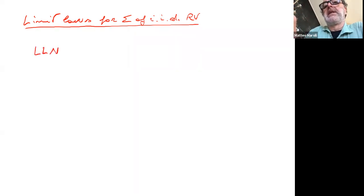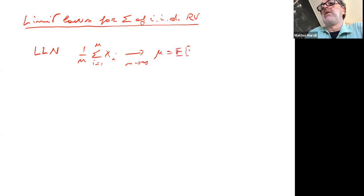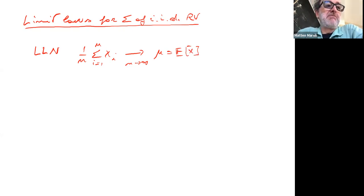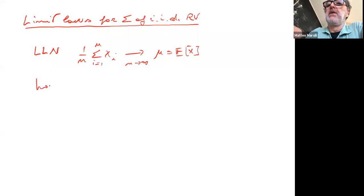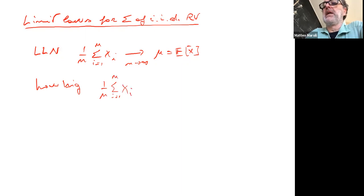The law of large numbers tells us that if you take a sequence of n iid random variables and take the arithmetic mean, then as n goes to infinity, this converges to a constant, which is the expected value of the random variable x. However, the law of large numbers does not tell us how big the deviation is — the difference between the mean and mu — and also it does not tell us how it is distributed.